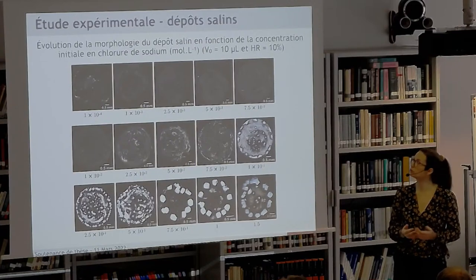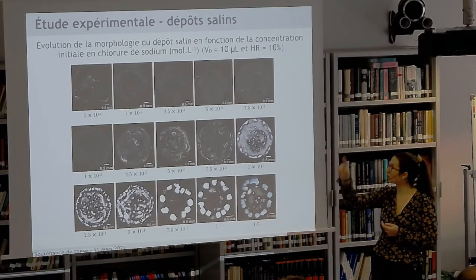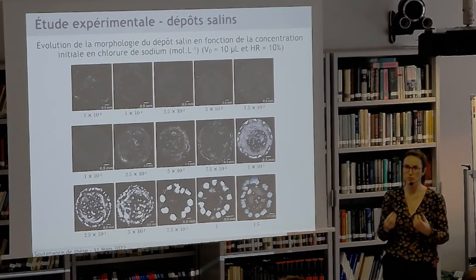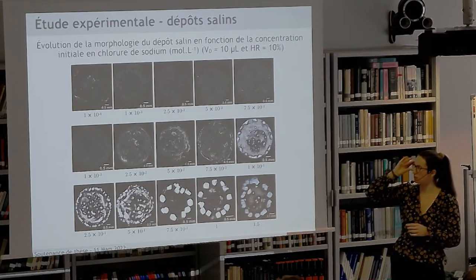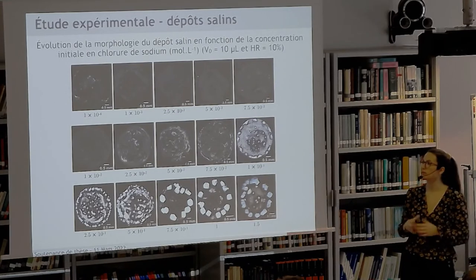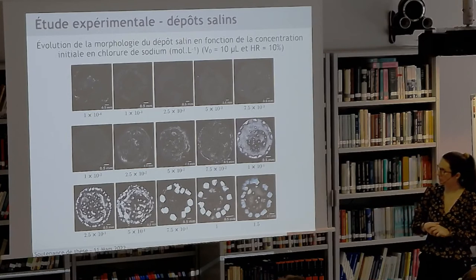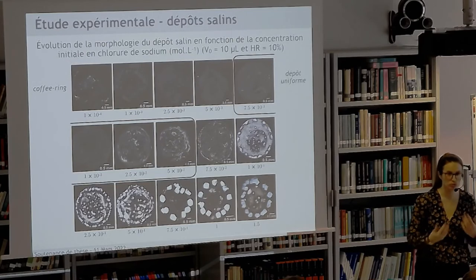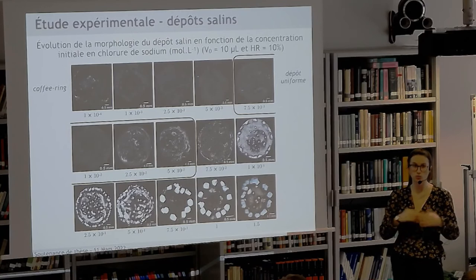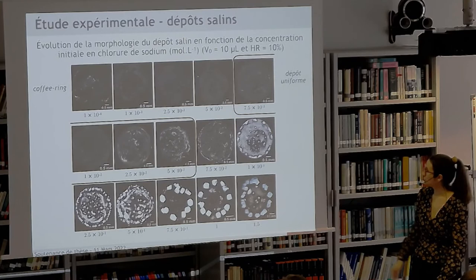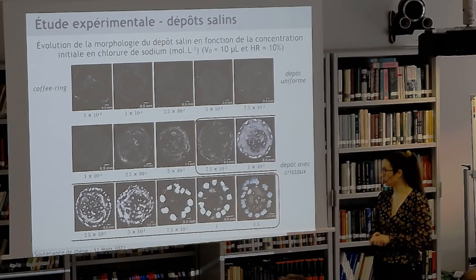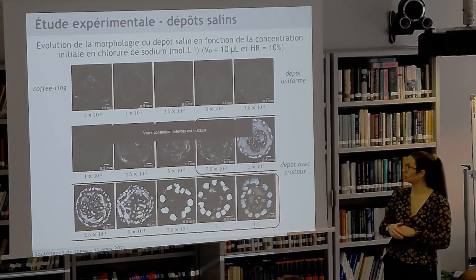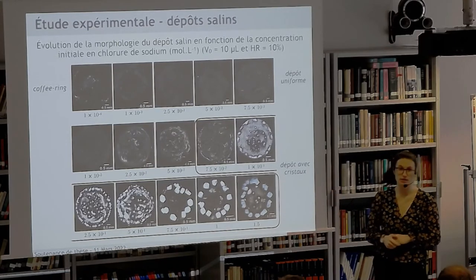La première étude porte sur l'évolution de la morphologie des dépôts salins en fonction de la concentration initiale en sel. On observe des morphologies très différentes : pour les faibles concentrations, le dépôt forme un anneau — le fameux coffee ring de Deegan. Quand la concentration augmente, on a une transition vers un dépôt uniforme, une fine couche de sel recouvrant toute la surface de contact. Au-delà d'environ 0,75 mol/L, on voit apparaître à l'œil nu des structures cristallines de plus en plus grosses dans le dépôt, qui évoluent avec la concentration initiale en sel.